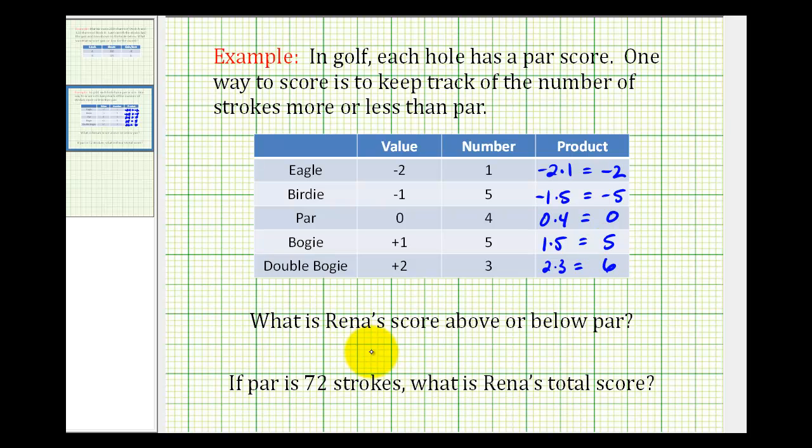So to determine the score above or below par, we need to sum these products. So we're going to have negative two plus negative five plus zero plus five and plus six.